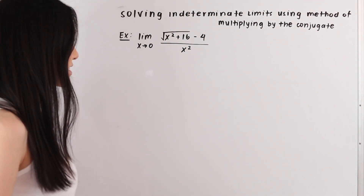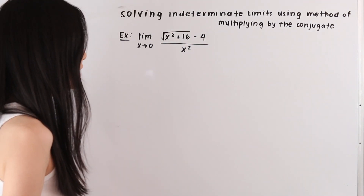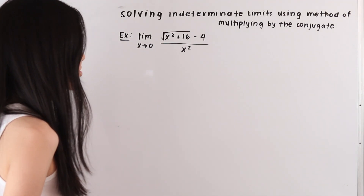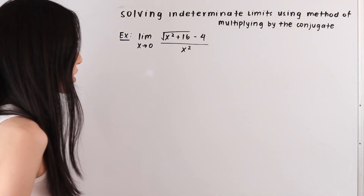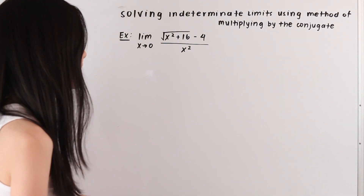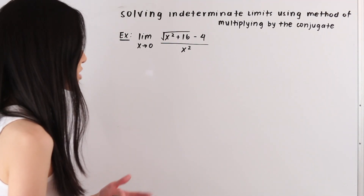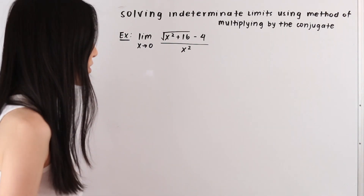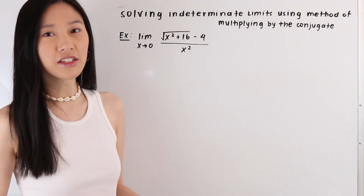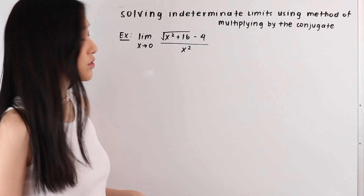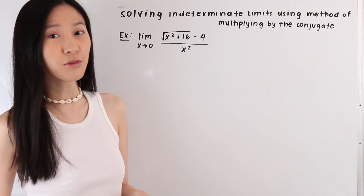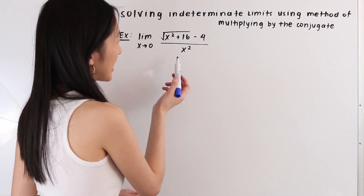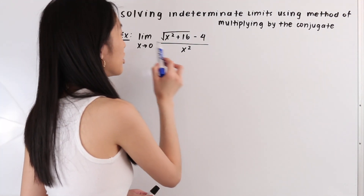The next method we usually try is factoring, but we don't really have anything to factor. There's also the method of expansion, but we don't have anything in parentheses to expand, and we don't have a complex rational fraction so we can't use the method of finding a common denominator. So the next method we'll learn today is used when we have a square root in the numerator or denominator, and we're going to multiply by the conjugate of the numerator.